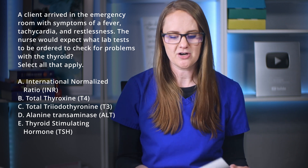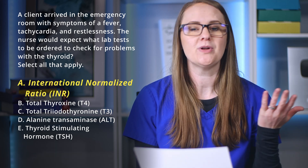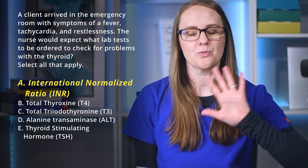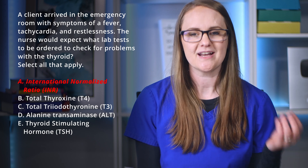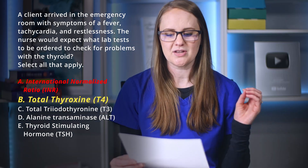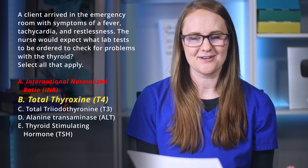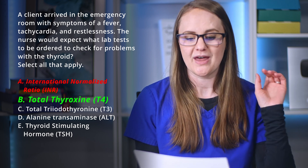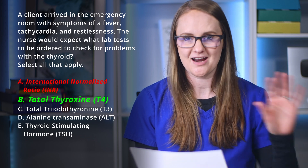We're trying to figure out what lab tests indicate problems with the thyroid. An INR test is not for the thyroid — it's for blood clotting. So we can dismiss that one right away; A is out. Total thyroxine T4 is a thyroid hormone, so that is going to help us diagnose an issue with the thyroid — we're going to choose B. That one is true as it relates to the question, but the INR is false.